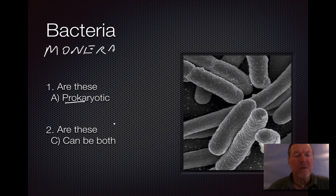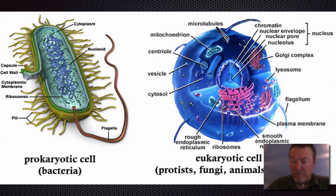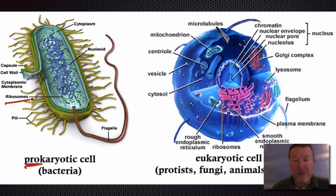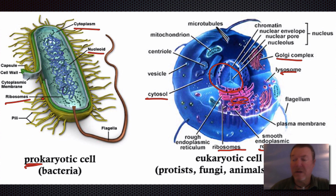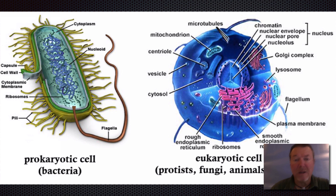Sometimes it's RNA. The next question: are they colonial or unicellular? In this case they can be both. Looking at the diagram, the prokaryotic cell — think of it as 'pre-karyotic,' before cells became organized — has ribosomes and nuclear material, similar to a eukaryotic cell. But all the rest of the structures in a regular cell, like the lysosome, Golgi complex, and endoplasmic reticulum, are membrane-bound organelles not found in prokaryotes.